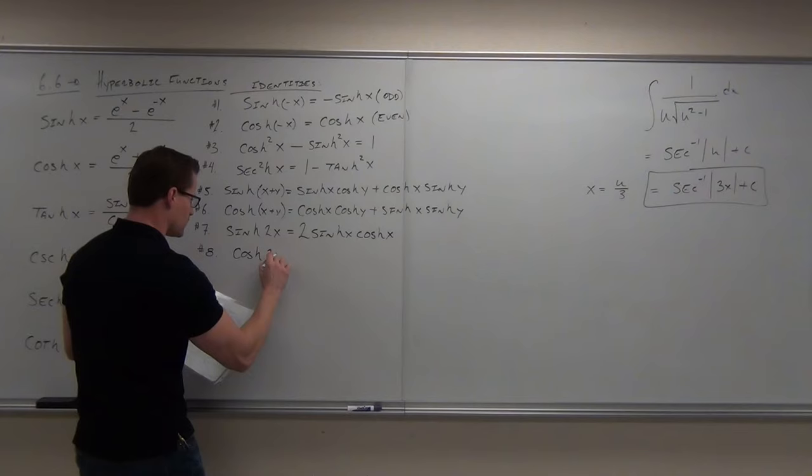Applying the quotient rule to tanh = sinh/cosh: low d high minus high d low, square the bottom. We get (cosh²x - sinh²x) / cosh²x.